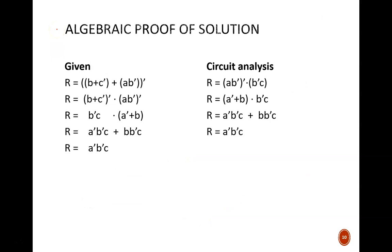So, let's break down each equation into a standard form. The Boolean algebra steps are shown here. At the end, we see that both the equation and the circuit output tell us R equals A prime B prime C. And thus, we have algebraic proof that they are equivalent.